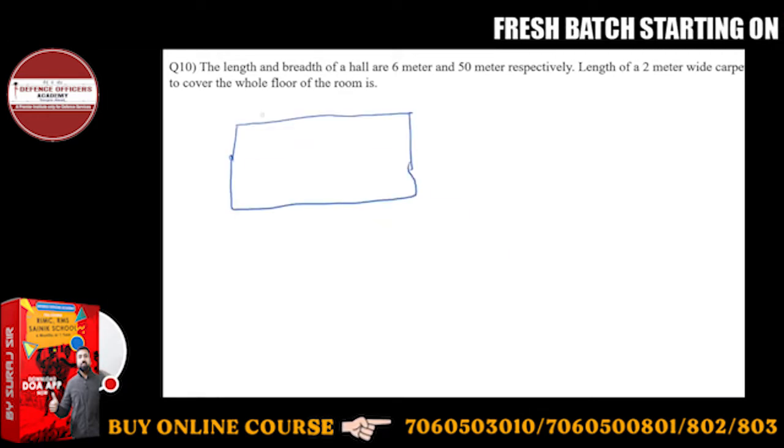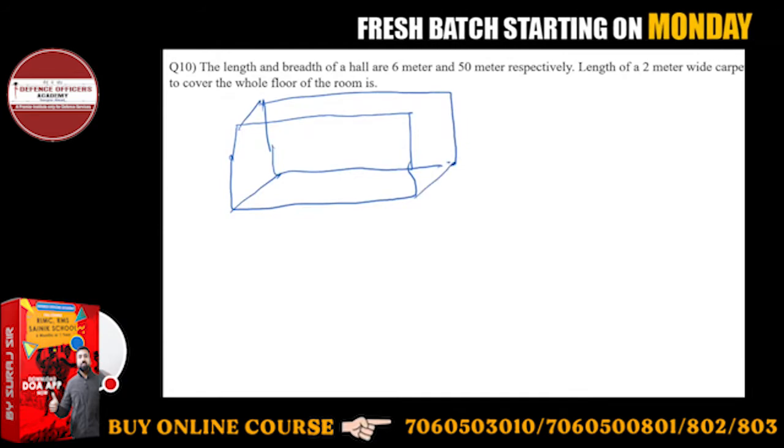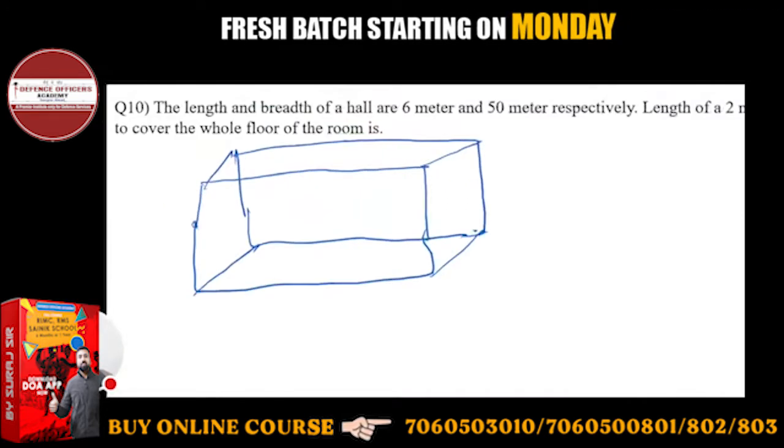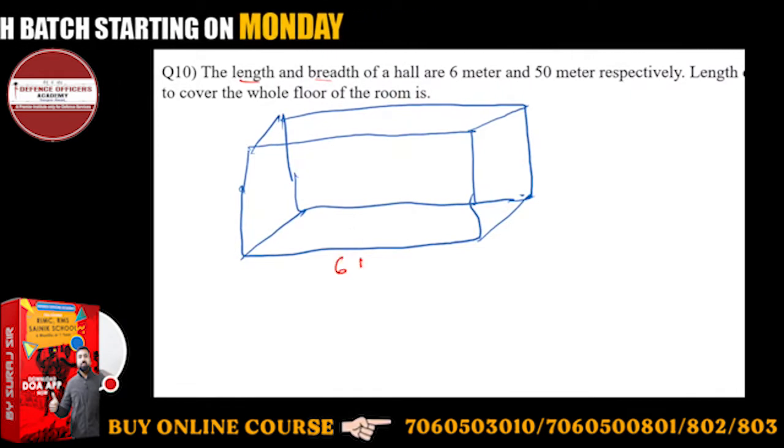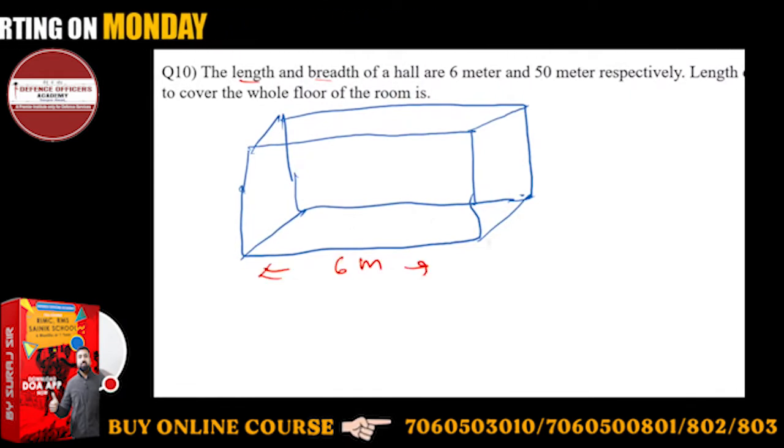There is a hall, suppose this is a hall. And what is given to you is this hall's length and breadth. This is 6 meter and width is 50 meter.